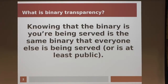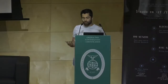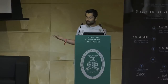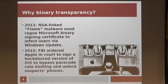How do you know Google or Apple hasn't specifically given you a backdoor version of that software because they were threatened or compelled to do so in a court order, or because their code signing keys were compromised? This is a real problem that has happened before. In 2012, there was a piece of malware developed by the NSA called Flame that used a rogue Microsoft signing certificate to spread the malware by infecting users via Windows Update. Microsoft didn't know because there was no transparency.